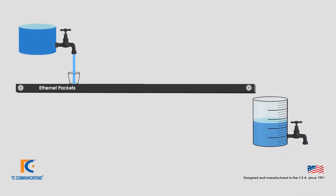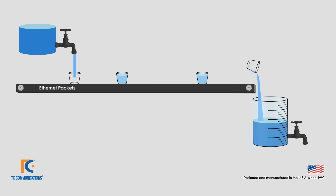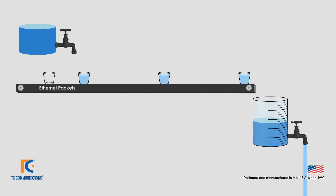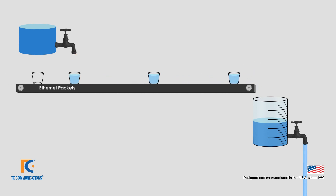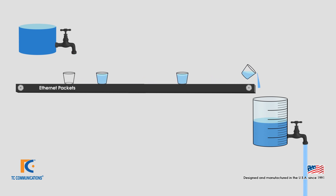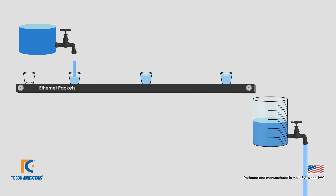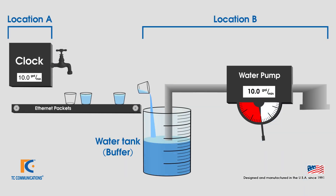However, when the data is transmitted using Ethernet packets, it looks like a conveyor belt transporting buckets of water. Each bucket symbolizes a packet. The data flow is now a series of buckets — the flow is no longer steady, but a series of buckets being emptied followed by a gap before the next bucket arrives.